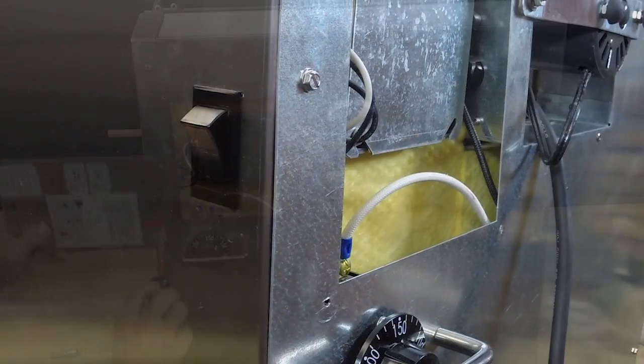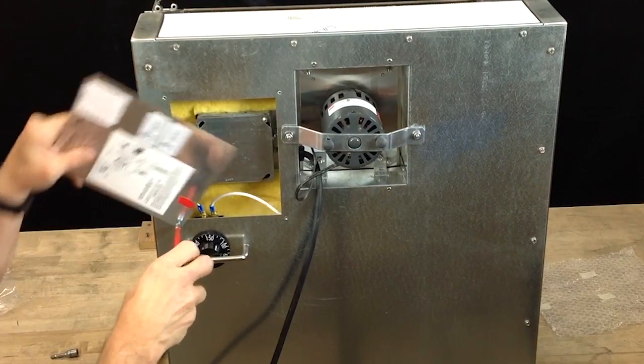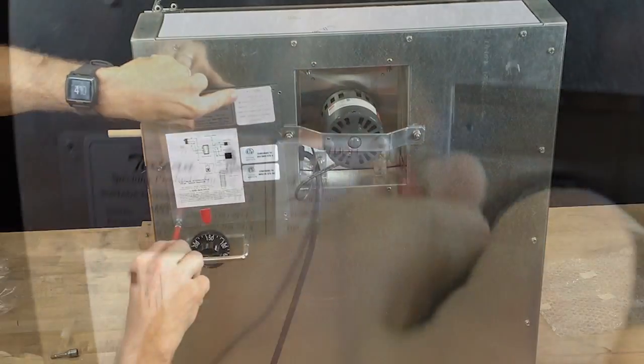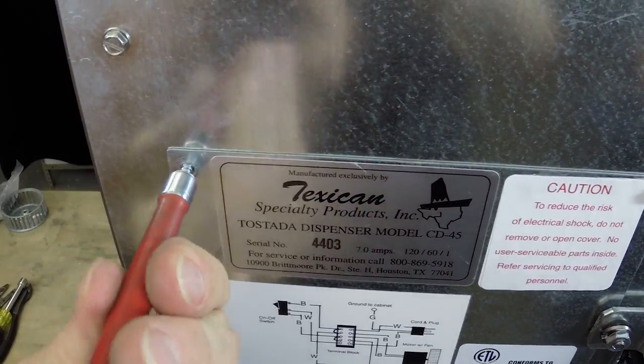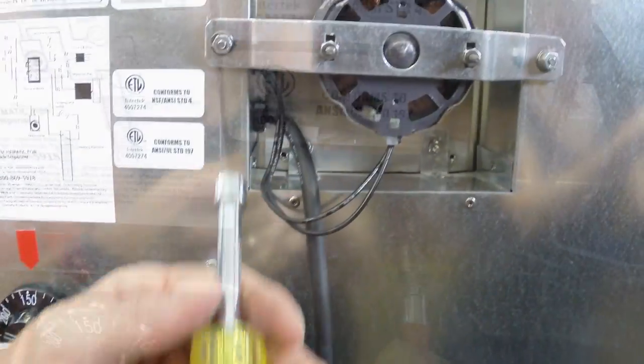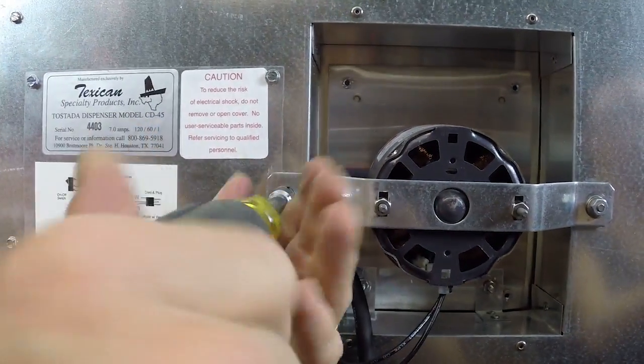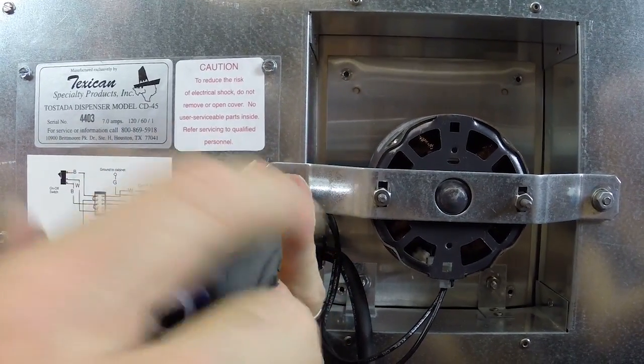Using the 1/4 inch nut driver, replace and tighten all four screws on the cover. Use the 3 1/8 inch nut driver to retighten the two nuts on the motor bracket.